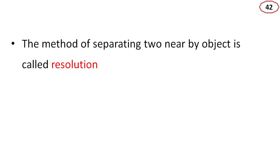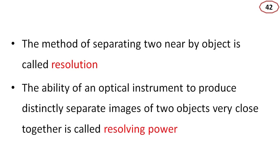Now, resolving power — what is resolution? You may have heard about resolution in the case of a telescope, camera, etc. Resolution is the method of separating two nearby objects. The ability of an optical instrument to produce distinctly separate images of two objects very close together is called resolving power.